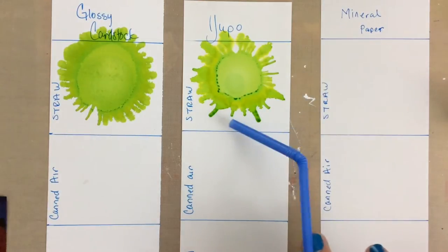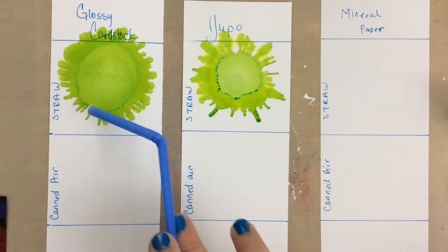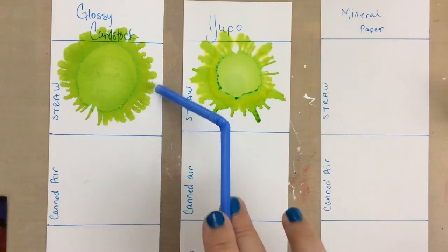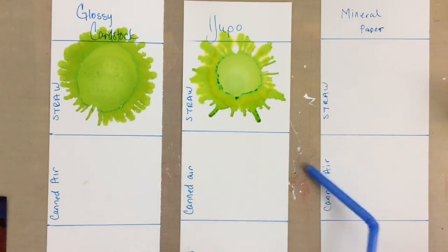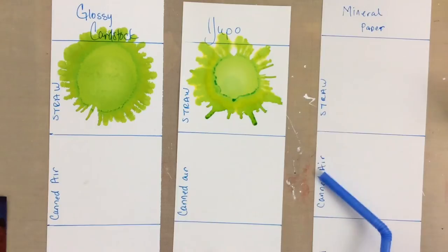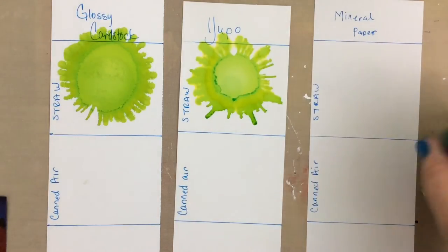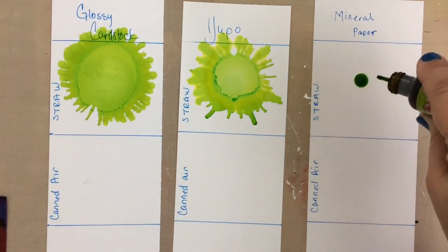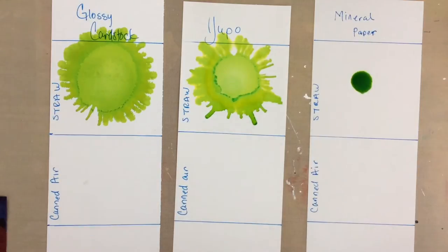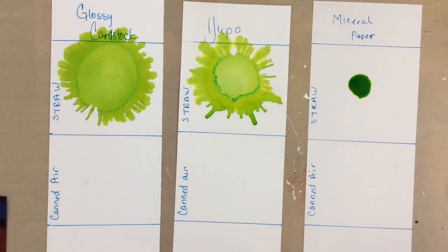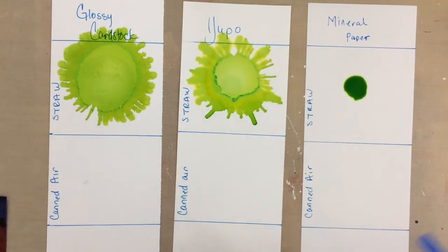They're a little bit thicker most of the time, and also the drying pattern is a little bit different. All right, let's try it on mineral paper. I don't think I've done this on mineral paper before, but it should be very similar to the others except it dries differently.